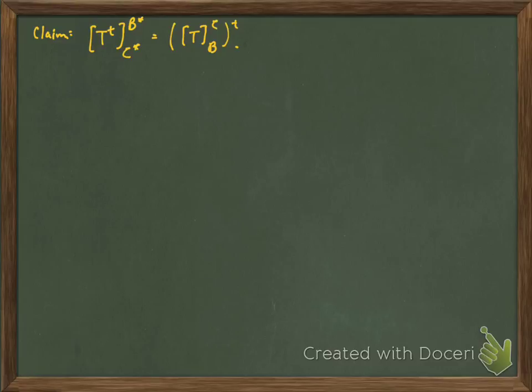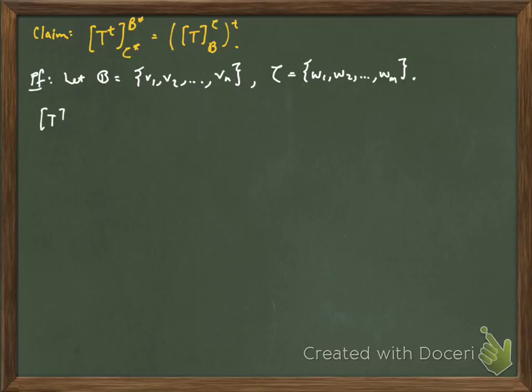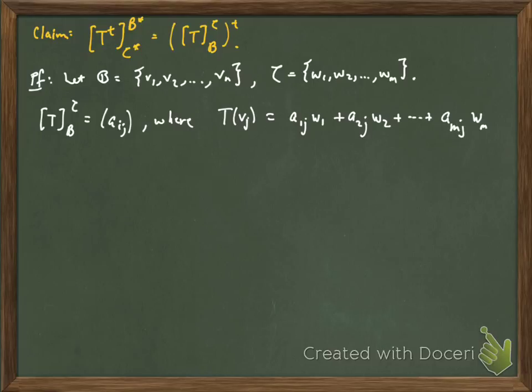So let's try to prove that. What would the proof look like? So I'm going to give my vectors in bases B and C some names. So I'll let B be V1, V2 up to Vn. And C is going to be W1, W2 up to Wm. Then the matrix representation of the map T is just this matrix Aij, where T of Vj is A1j W1 plus A2j W2 plus, and so on, all the way up to Amj Wm.